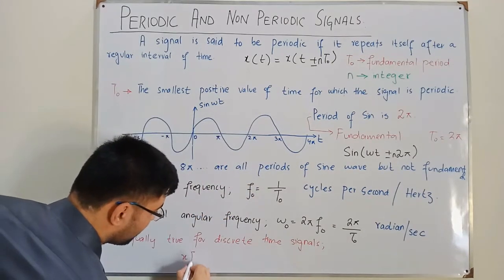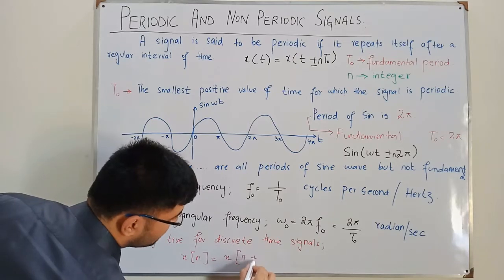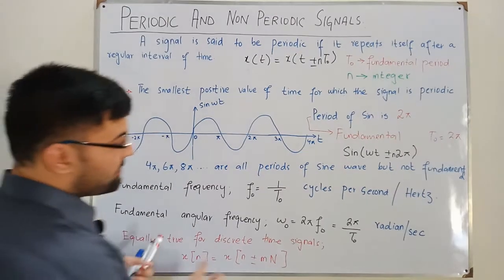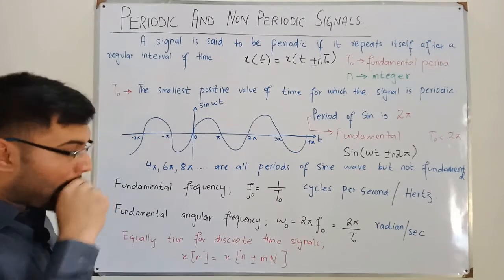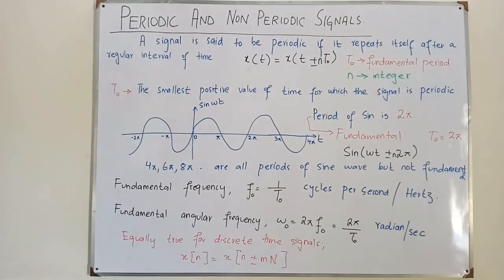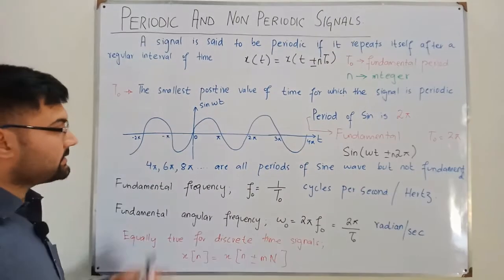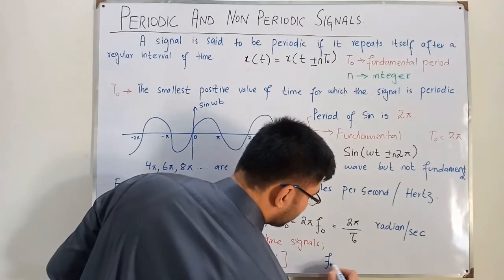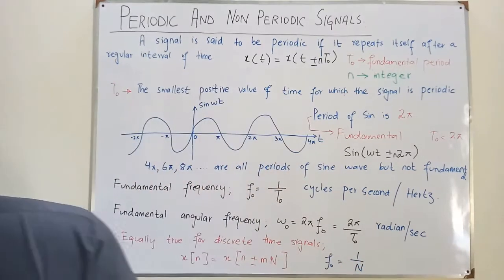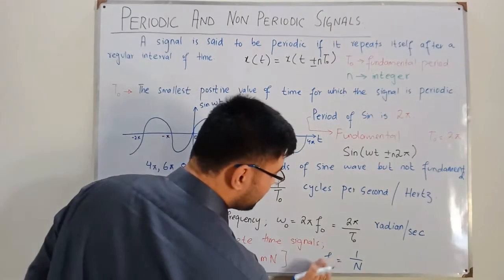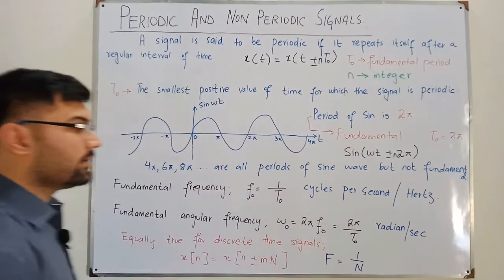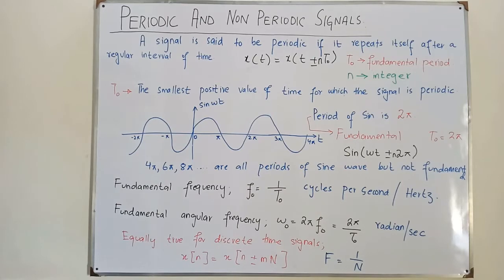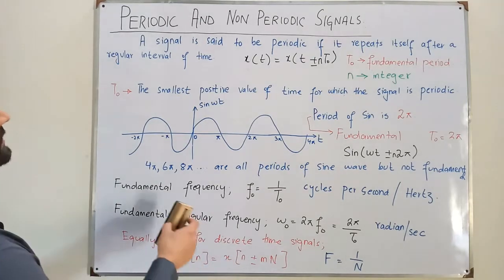In the discrete-time case, capital N is the fundamental period and m is an integer. Similarly, the fundamental frequency f₀ = 1/N (with capital N), denoting the fundamental frequency for discrete-time signals.